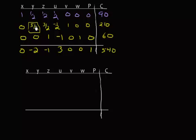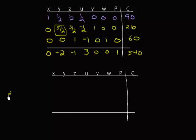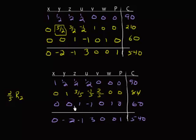I need to turn this into a positive 1. I'm going to multiply row 2 by 2 fifths, because 2 fifths times 5 halves will be a 1. So, I'm now going to get 0, 1, 3 fifths, negative 1 fifth, 2 fifths, 0, 0, and 84. Nothing's changing to the other rows. Our pivot element is right here. We need to make these zeros.